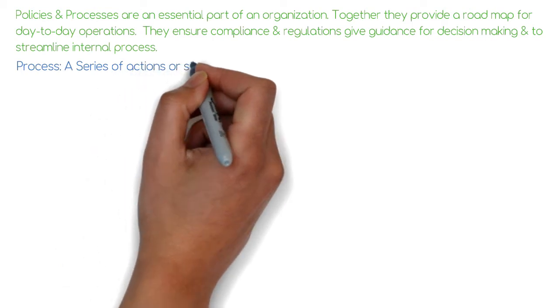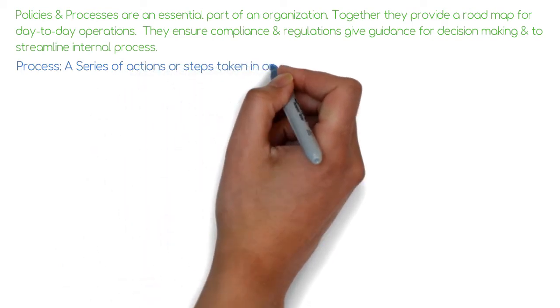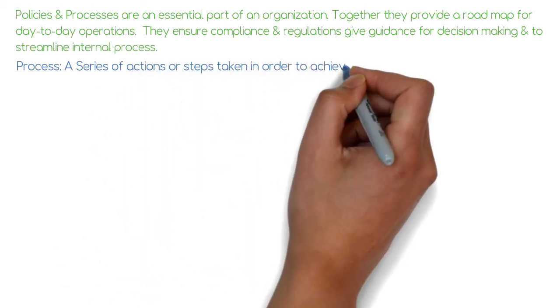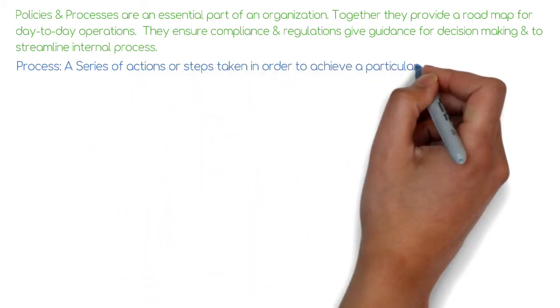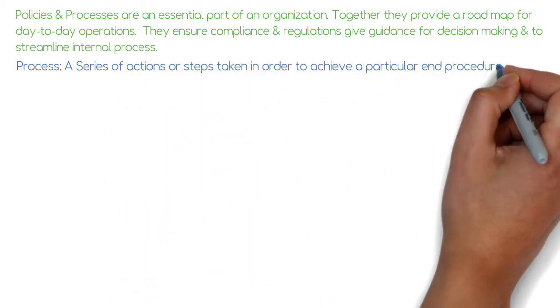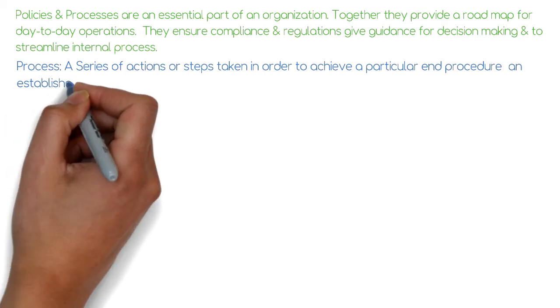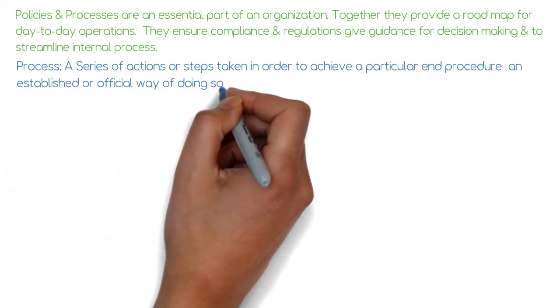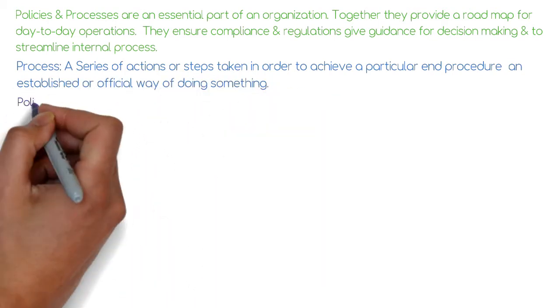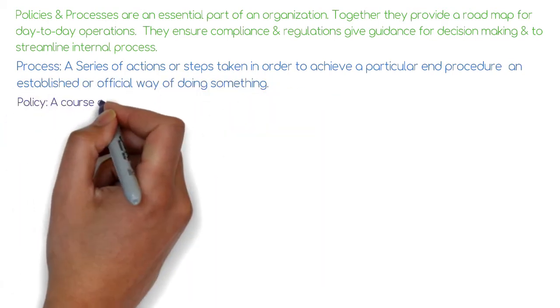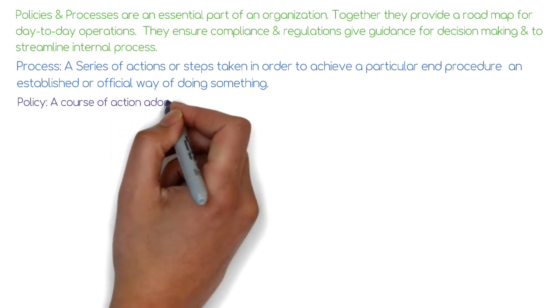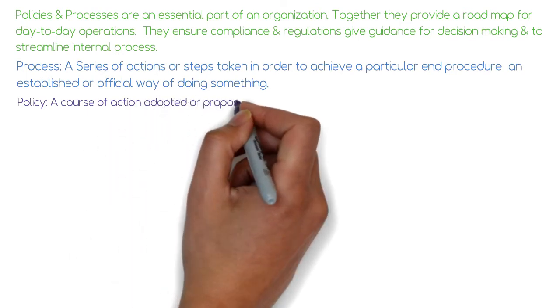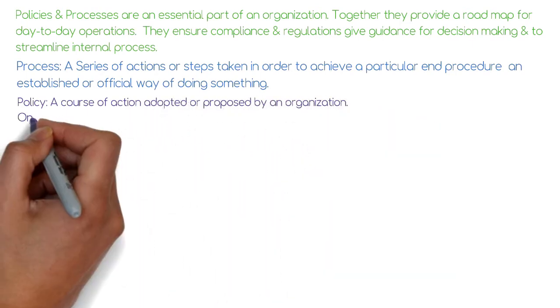Process: a series of actions or steps taken in order to achieve a particular end. Procedure: an established or official way of doing something. Policy: a course of action adopted or proposed by an organization.